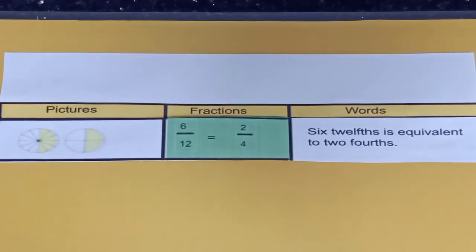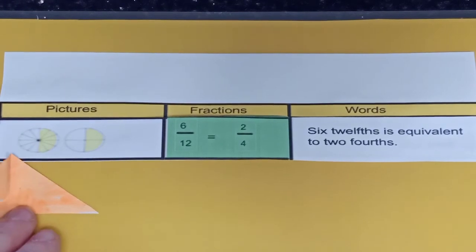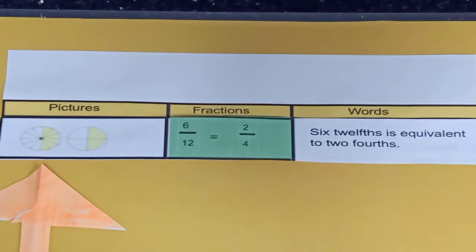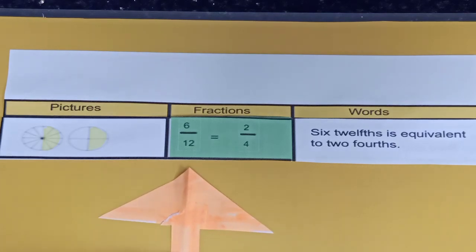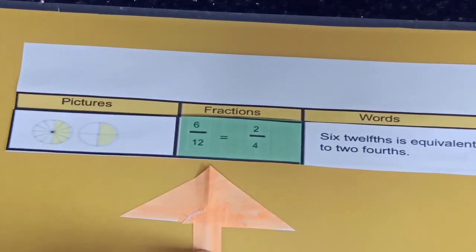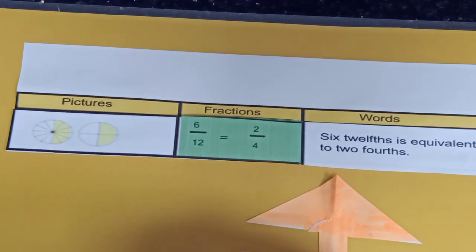And one more set of equivalent fractions. So over here on the far left, this time the circle is divided into 12 equal pieces, and 6 pieces are highlighted. So that makes the fraction 6 over 12. An equivalent fraction: it's a circle divided into 4 equal pieces, and only 2 of them are highlighted, so that fraction is 2 over 4. Looking at it numerically, it looks like this: 6 over 12 is equal to 2 over 4. And looking at it in words, 6 twelfths is equivalent to 2 fourths.